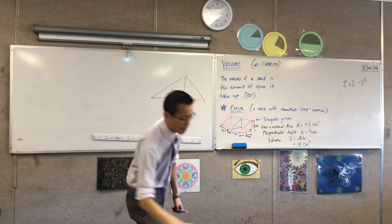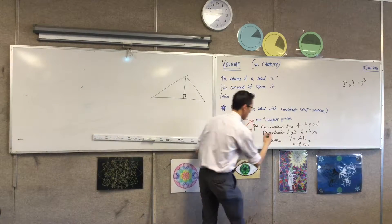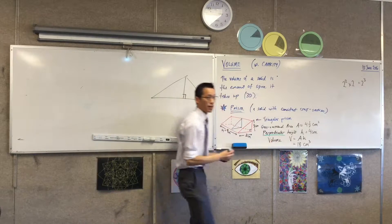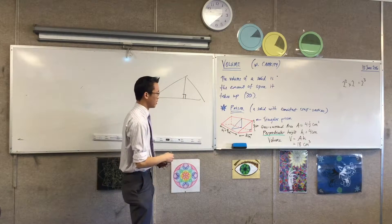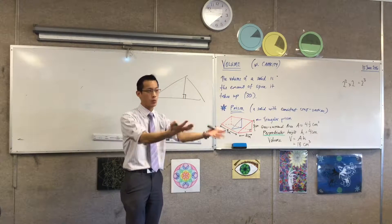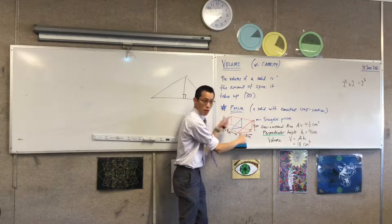Now the important thing, and maybe you want to underline this, is this height business. It must be perpendicular. It must be perpendicular to the cross section because it's easy to pick, just as we just discussed. It's easy to pick the wrong number.